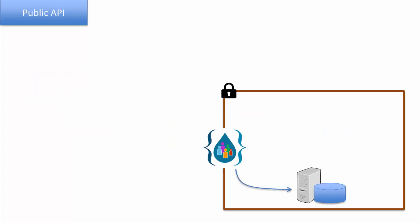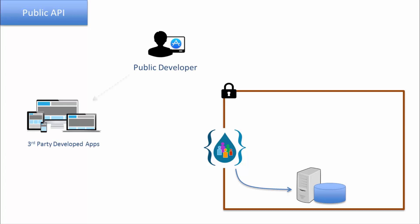The public API is always on the edge of the enterprise to provide controlled access to enterprise resources. The developer is an untrusted public developer who creates applications which connect to the enterprise resources by way of this public API.